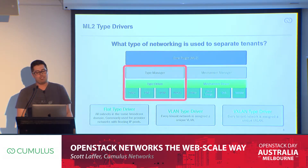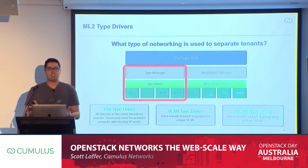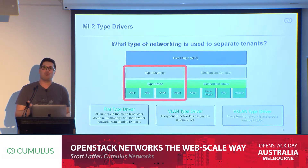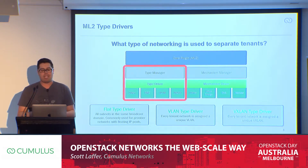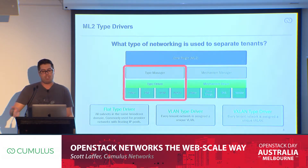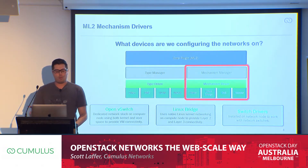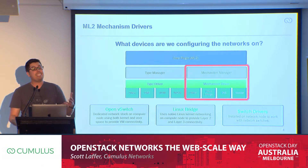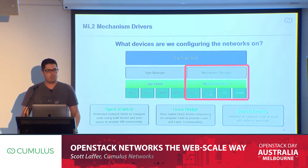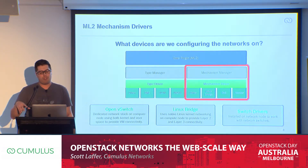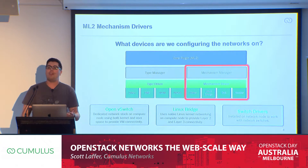A quick recap on OpenStack networking types: ML2 is the standard for Neutron networking. It's a framework that provides two types of things — mechanisms and types. The network types you're trying to deploy include flat (your provider network, no VLANs, everything in one broadcast domain), VLANs for tenant separation, and more modern VXLANs. The mechanism drivers define what you're deploying those network types on — from a server perspective you can deploy Linux bridges or Open vSwitch, and there are also switch mechanism drivers for external networking devices.